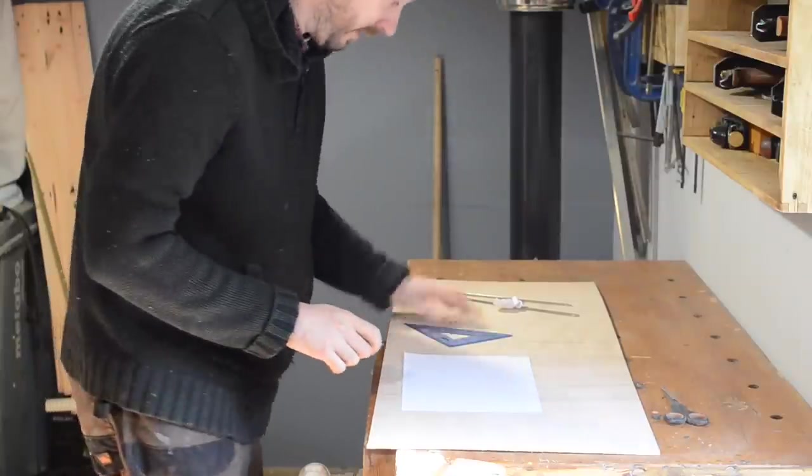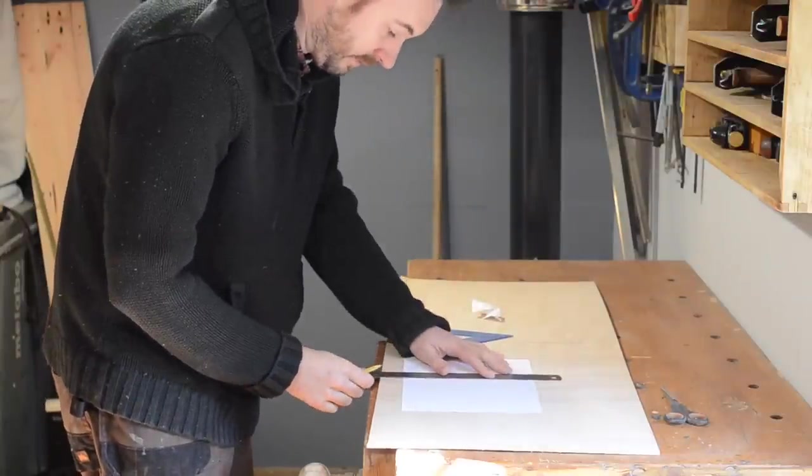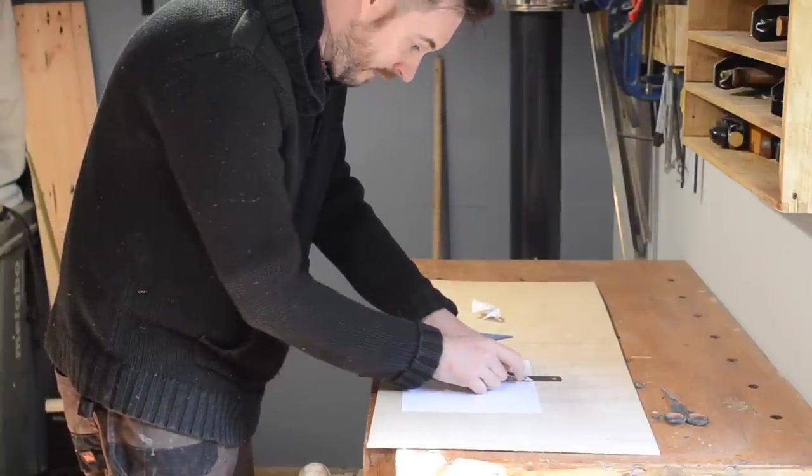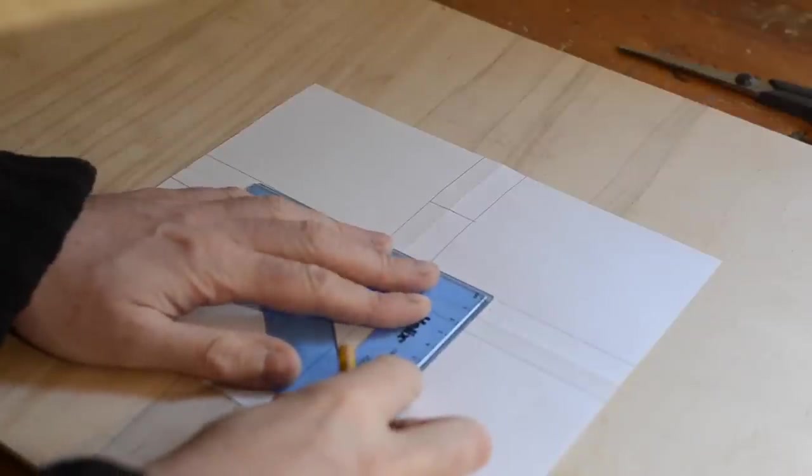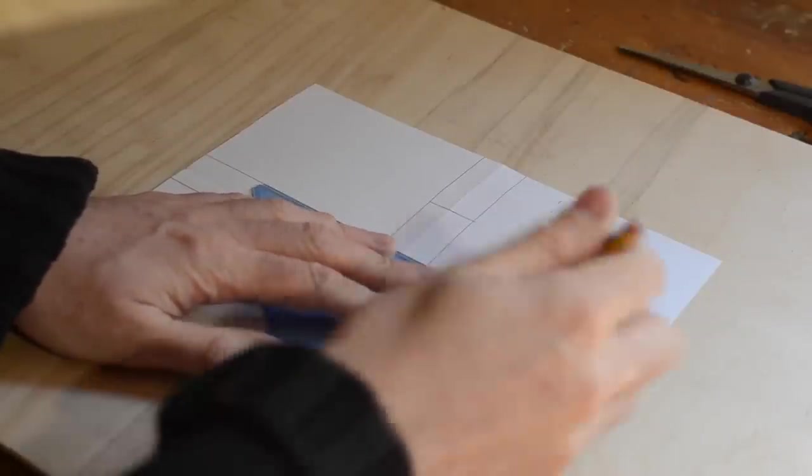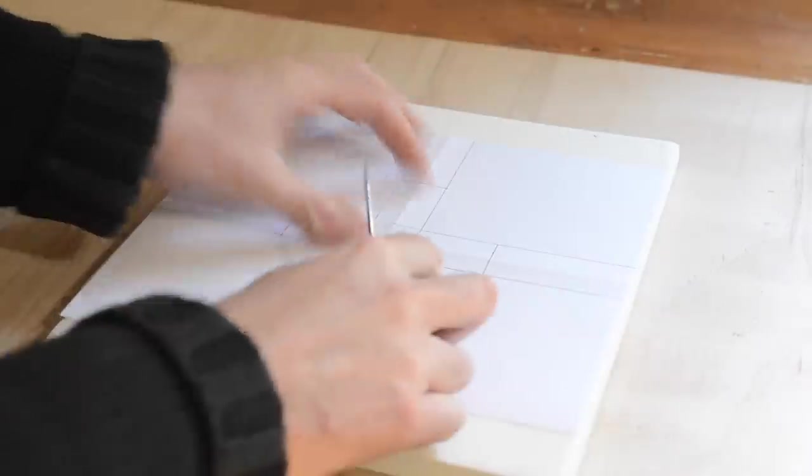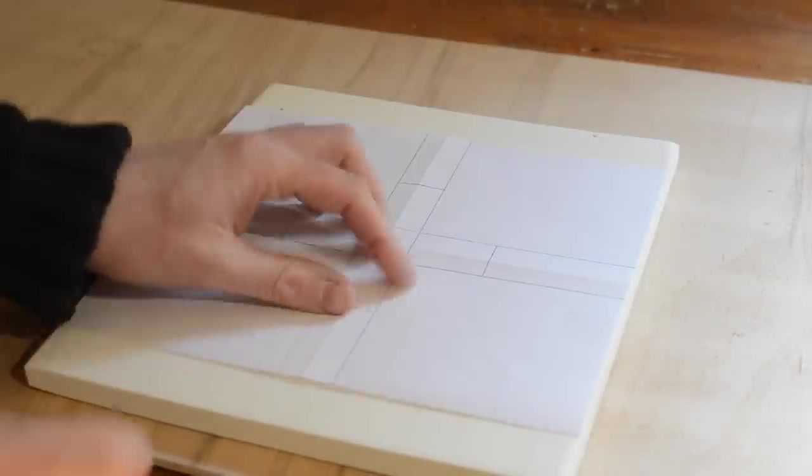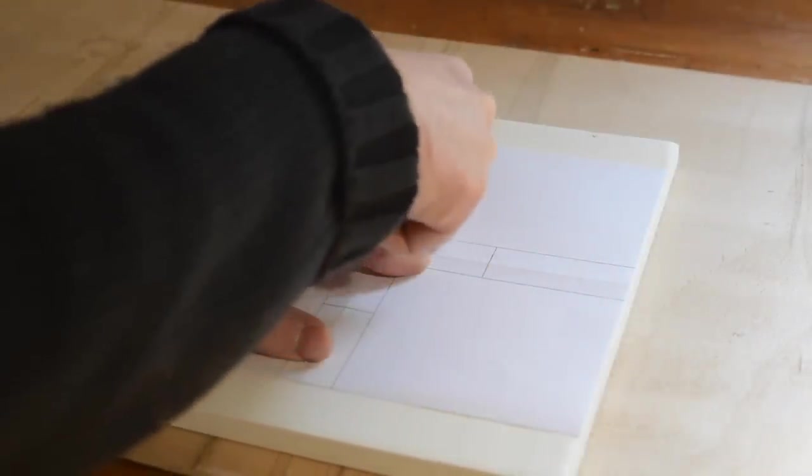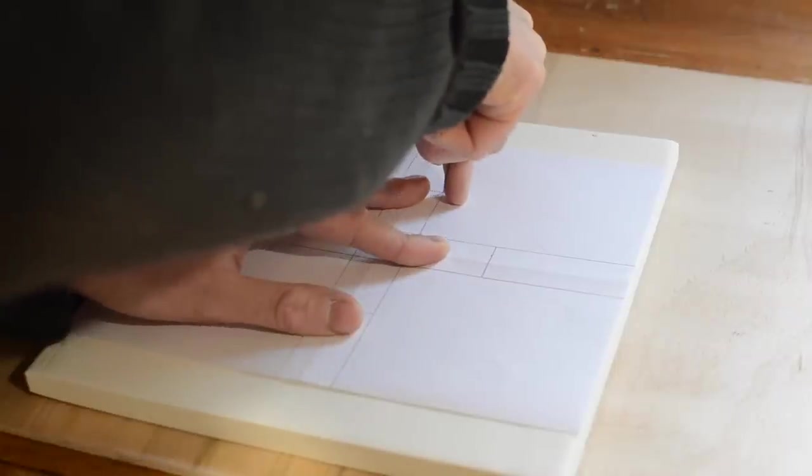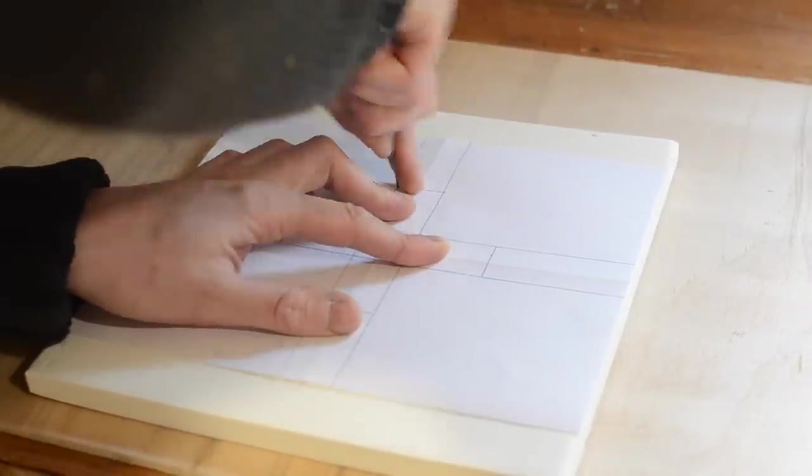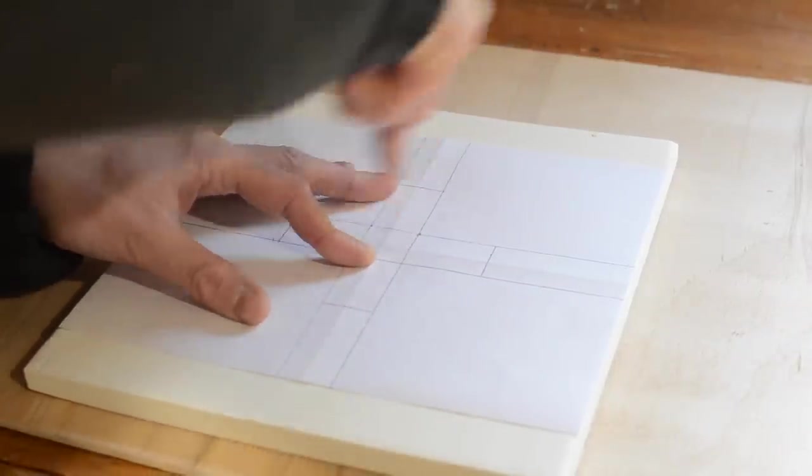Most first aid boxes or cabinets I looked at had a cross on the front to indicate what they were. So I drew out a cross on a bit of paper. I can then get this bit of paper positioned in the middle of the door and use an awl just to poke out all the corners. I did it this way because I didn't want to draw directly onto my door. With all the holes marked out I can then join up the dots and draw out the cross.